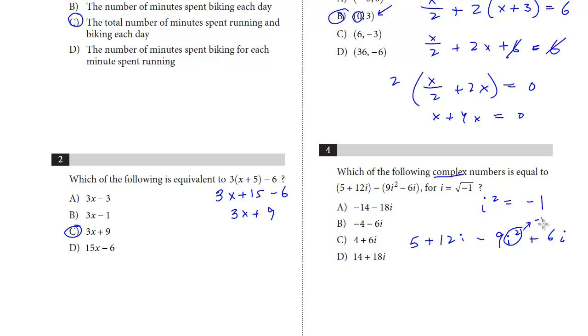And so here we have a negative 1 times a negative 9. This becomes plus 9. And then we can just combine all the other terms. Here's a 5 plus 9. We get 14. And then we can combine the i's: 12i plus 6i. That's 18i. And that is the answer, d.